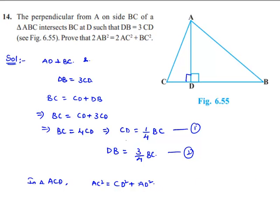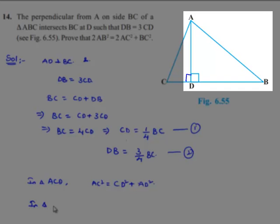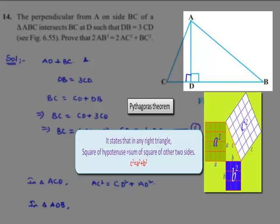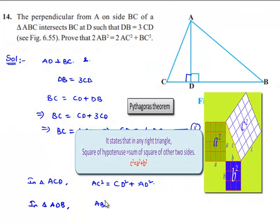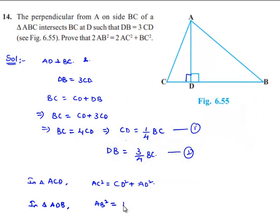Also, if we consider triangle ADB, it is also a right angle triangle as ADB is equal to 90 degrees. Square of hypotenuse, that is AB square, is equal to sum of square of other two sides, that is DB square plus AD square. So here we need to eliminate AD square.